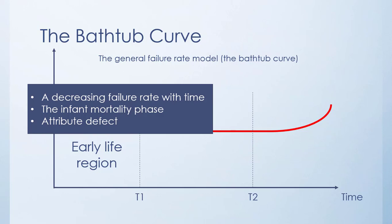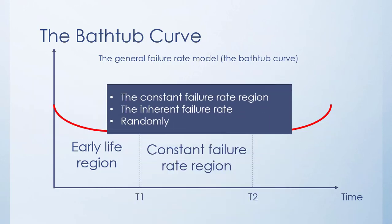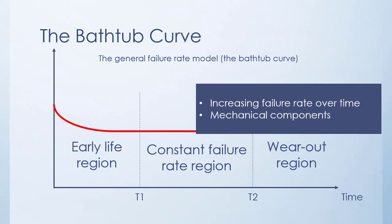The failures in this region are usually attributed to defects in the manufacturing processes, assemblies, and shipping of the product. The second region of the bathtub curve is the constant failure rate region, which is characterized by the inherent failure rate of the product's composite components. In this region, the failures occur randomly over time.